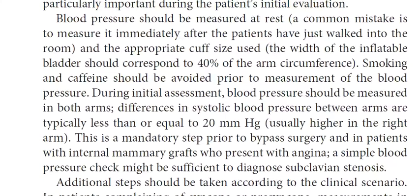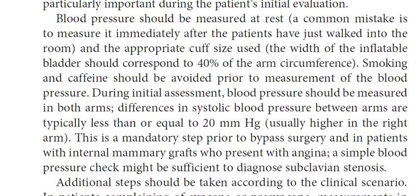The void of the inflatable bladder should correspond to 40% of the arm's circumference. Smoking and caffeine should be avoided prior to blood pressure measurement. During initial assessment, blood pressure should be measured in both arms. Differences in systolic blood pressure between arms are typically less than or equal to 20 mmHg, usually higher in the right arm. A simple blood pressure check might be sufficient to diagnose subclavian stenosis.